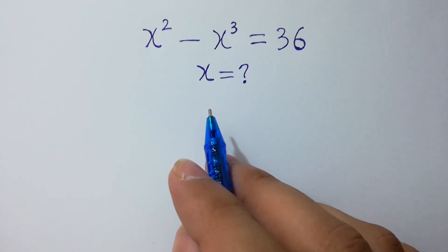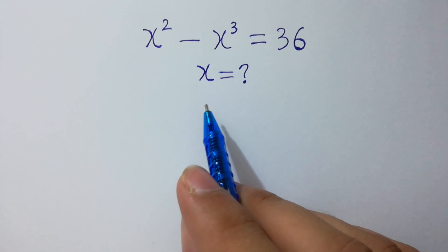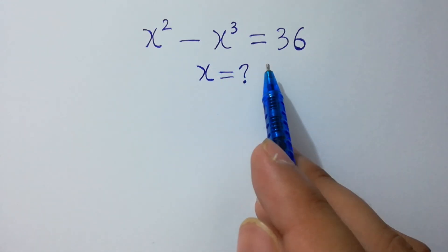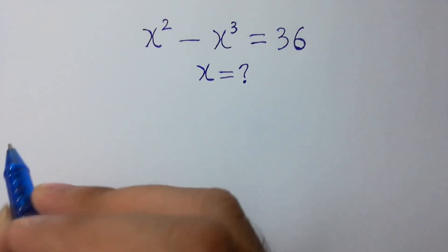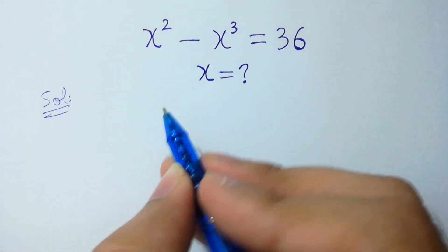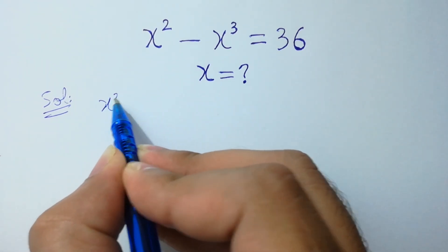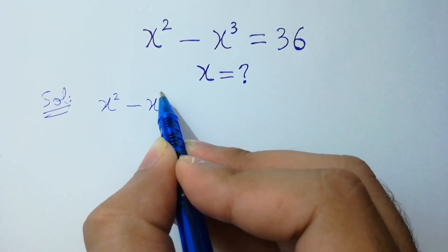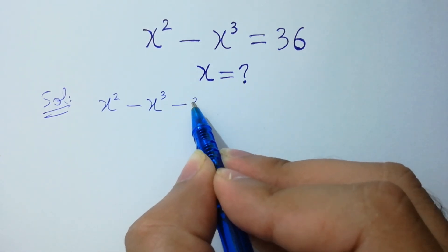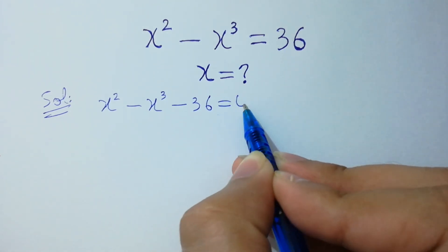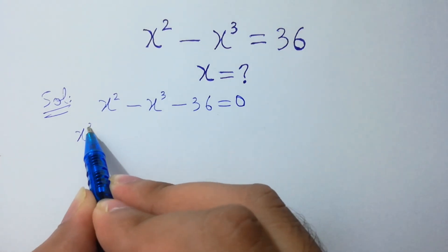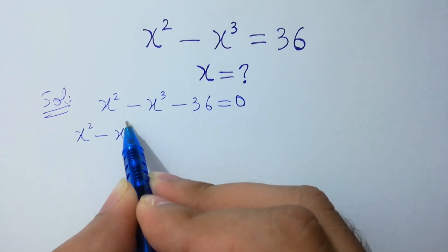Hello friends, find the value of x if x squared minus x cubed equals 36. Let's solve it. x squared minus x cubed minus 36 equals 0.